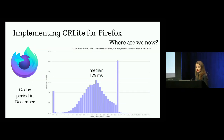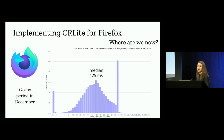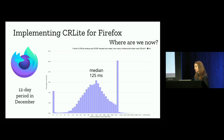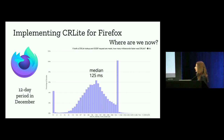We're particularly looking at the difference between CRLite and OCSP and how much faster CRLite is. The telemetry shows that sometimes CRLite is not faster than OCSP, with a difference around 0 milliseconds, but we do have a median difference of about 125 milliseconds. We're seeing very interesting behavior in the tail — this is the effect of the one-second timeout of OCSP. For over 10% of the time, OCSP is timing out but CRLite is very quickly getting to a result. CRLite is faster than OCSP — this is what we expected, and it has been nice to confirm this with our functional prototype.